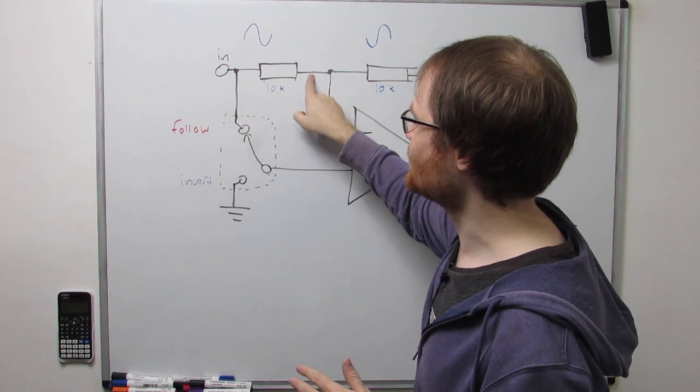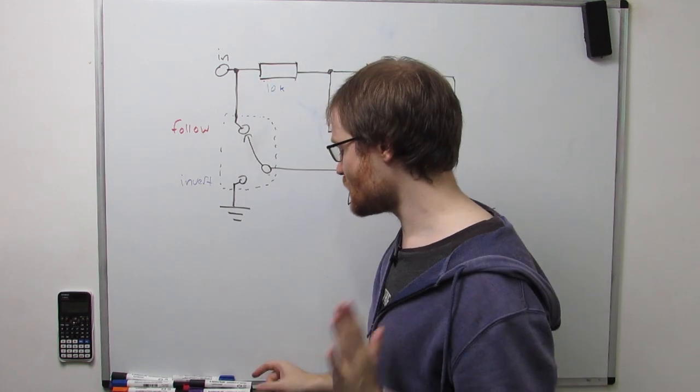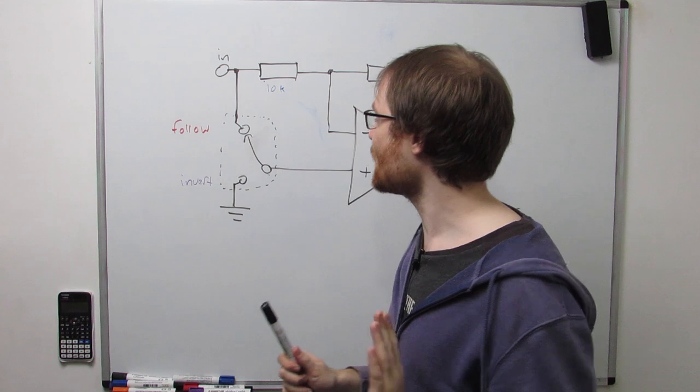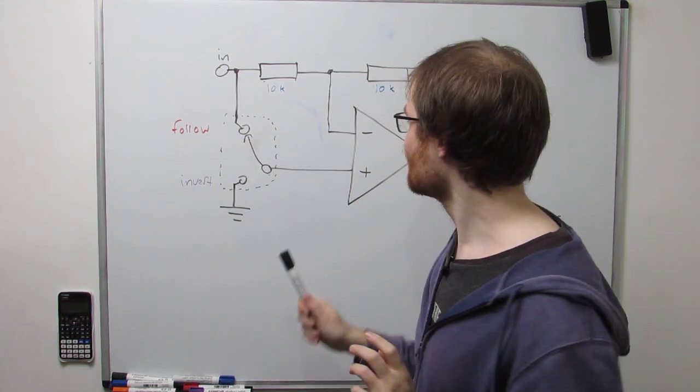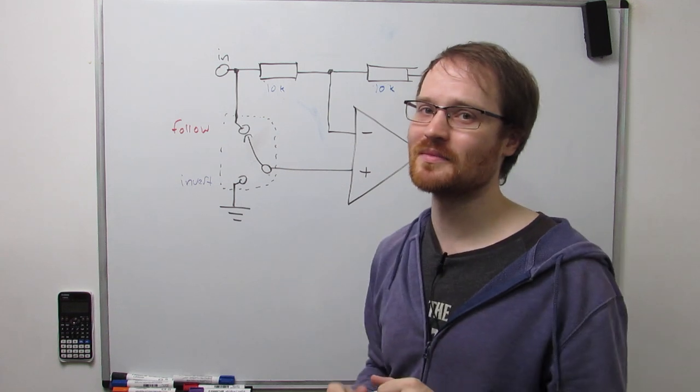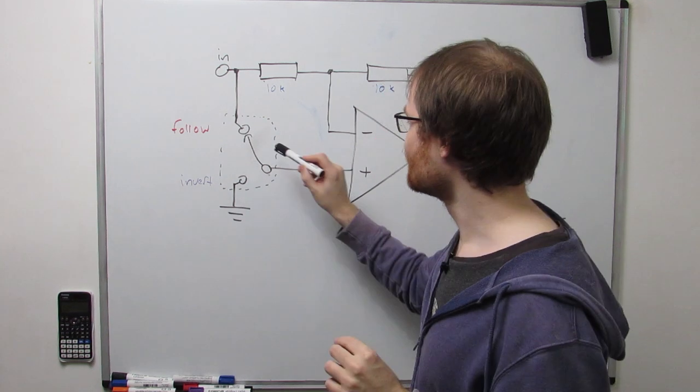And what we do know is we've got an unencumbered path for the input to the non-inverting terminal, so we know that the output wants to make these two inputs the same. So we know that the output is going to try and make this input look like this input, and this input just looks like an ordinary input. So what the output will do is just follow the input. Okay, so what's going on with this connection here?